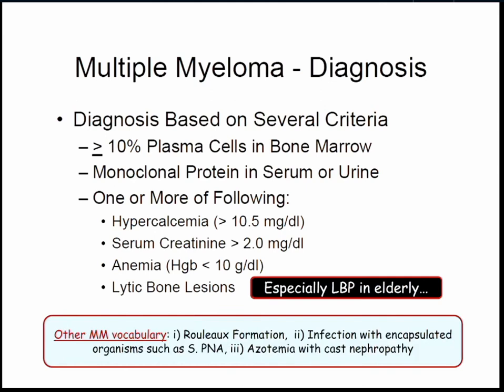Now we lapse from MGUS to myeloma. For the boards, that lytic bone lesion is going to be low back pain in an old guy — myeloma or metastatic prostate cancer. They'll tell you it has Rouleau formation: the immunoglobulins negate the charges on red cells, they clump and fall, elevating the sed rate. Also, increased risk of infection with encapsulated organisms — specifically strep pneumo — because you're not making functional IgA or IgM. And these patients almost always have a creatinine of 2.1.